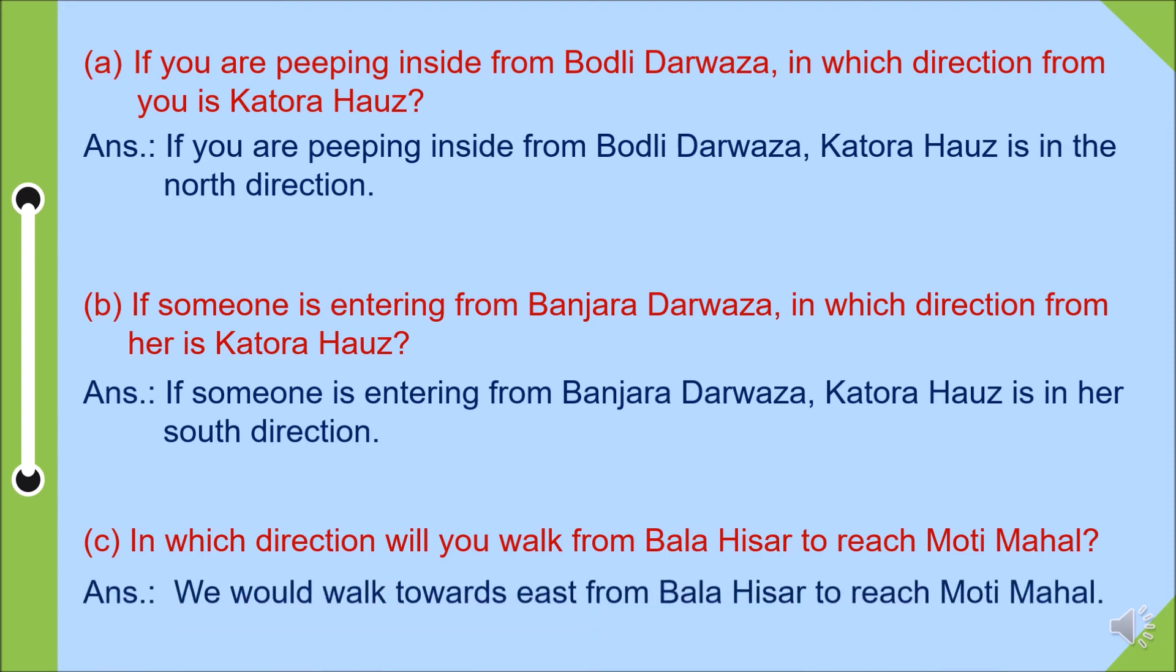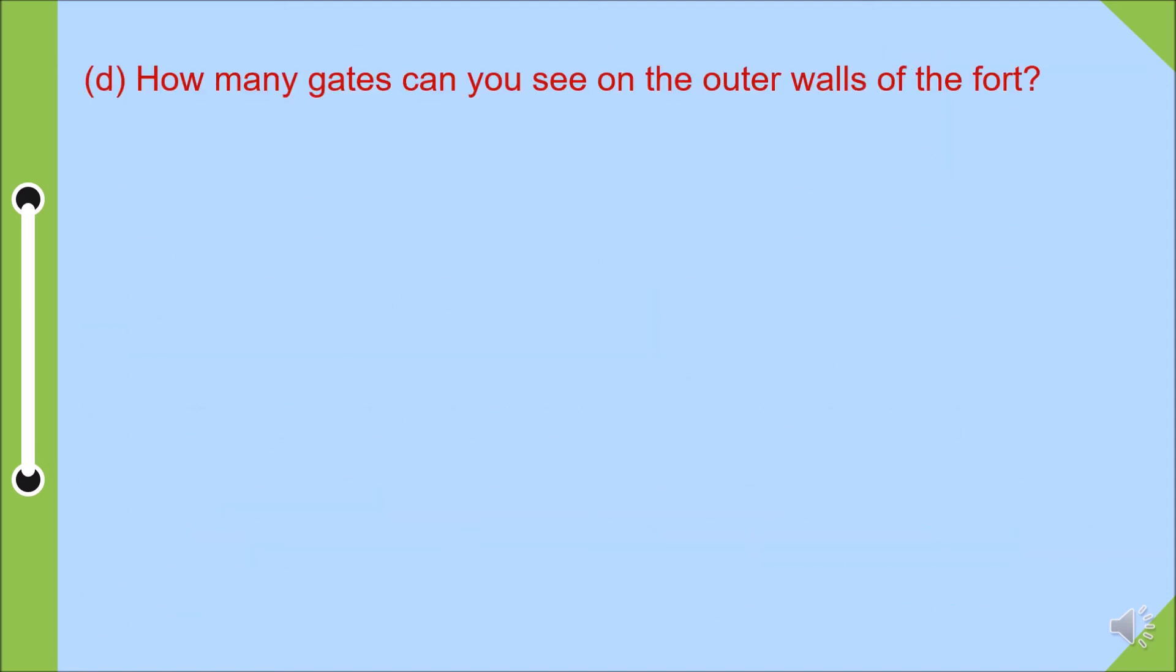Answer: we will walk towards west to reach Motimahal. Question D: how many gates can you see on the outer wall of the fort? Answer: there are 9 gates on the outer walls of the fort.